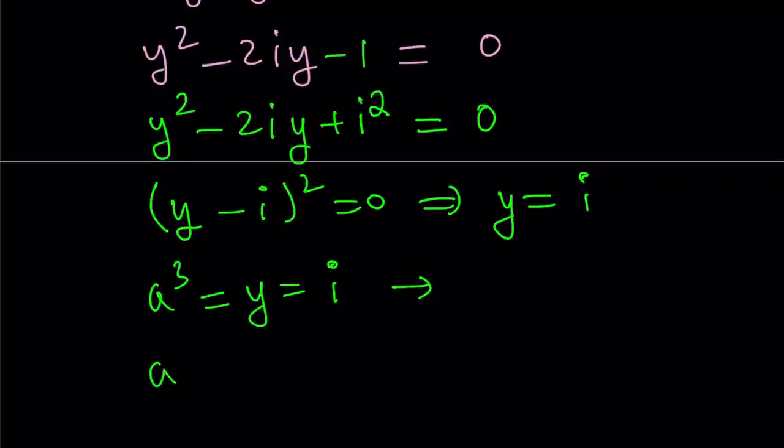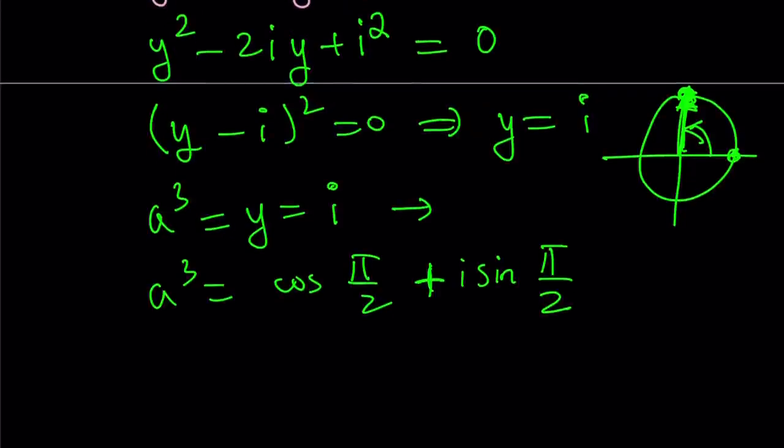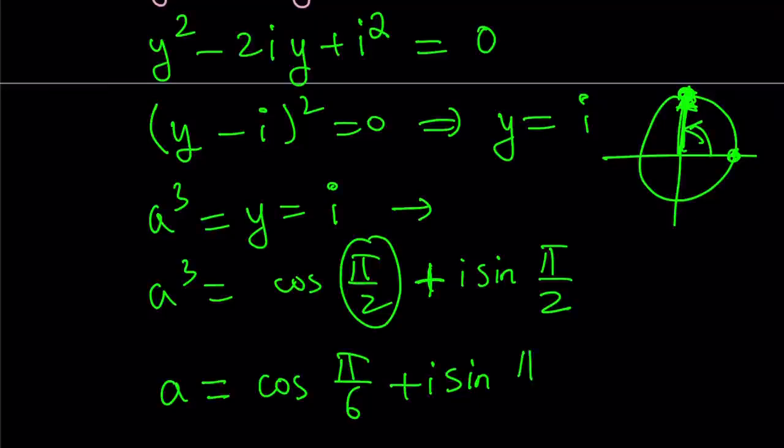So we have the cube root of i. Let's look at the smallest angle that satisfies it. Since i can be written as cosine(π/2) + i·sin(π/2), and notice that its modulus is 1 in this case. The angle is π/2, and its modulus is 1, so it's on the unit circle. This is a³, and in this form it's very easy to find the cube roots. All you have to do is divide the angle by 3.